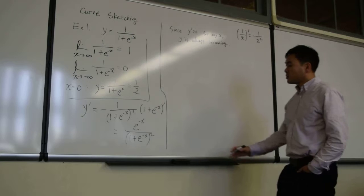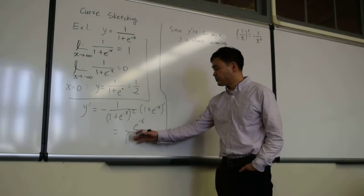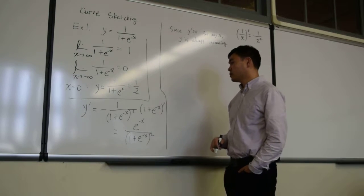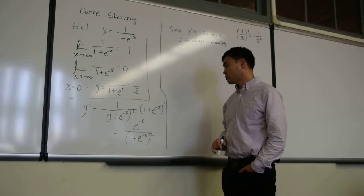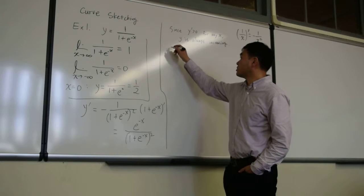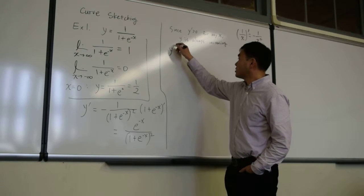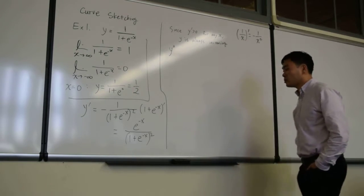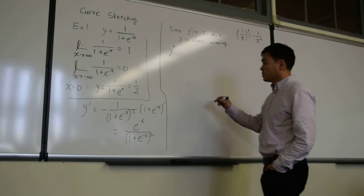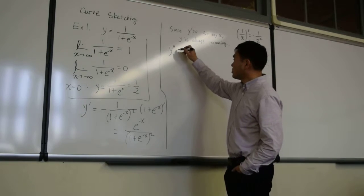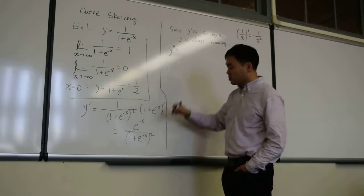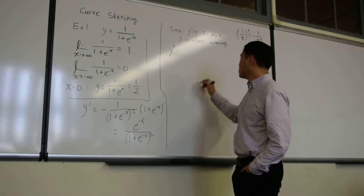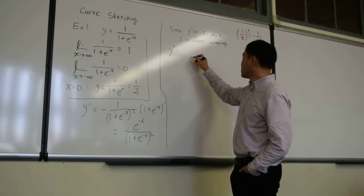The first conclusion you can make from y prime is that the function is always increasing. The second thing is you need the second derivative. To compute that, you really need the quotient rule, where you square the denominator.